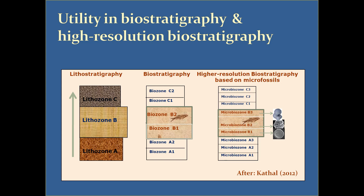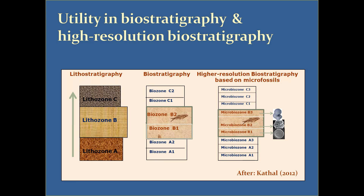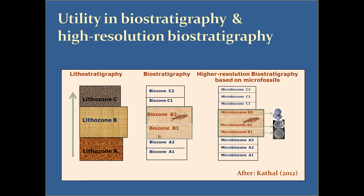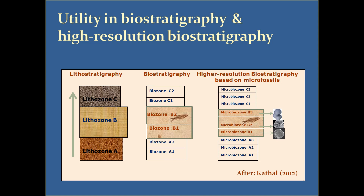But if we use microfossils — foraminifera, ostracoda, calcareous nannoplankton, and others — the bio zones can be further divided and we can call them micro bio zones. So in lithostratigraphy we could make only three zones, in biostratigraphy on the basis of larger fossils we could make six zones, but when we use microfossils we are able to make nine zones. This is an illustration of how high-resolution biostratigraphy may be achieved using microfossils.